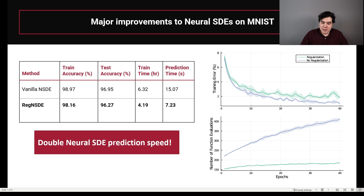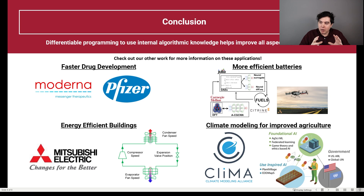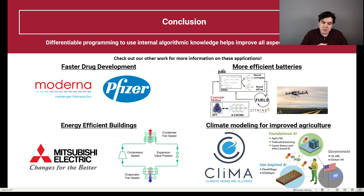What this is really showing is that the general idea of using internal algorithmic information — from SDE solvers, ODE solvers, and probably also nonlinear solvers like in deep equilibrium models — using that internal information for error estimators can improve the training process for machine learning applications. We probably do not want to be keeping these algorithms as a black box in the future, but instead open up that black box and use all of the information given to us.